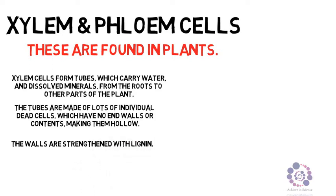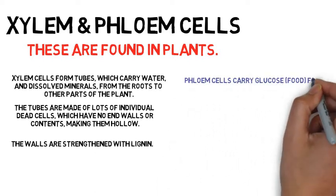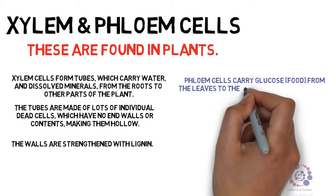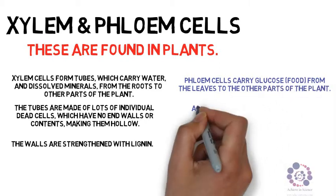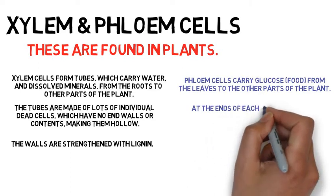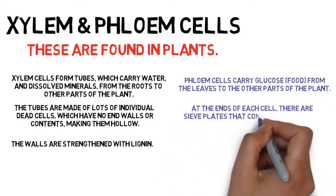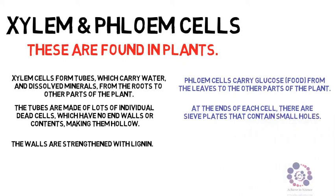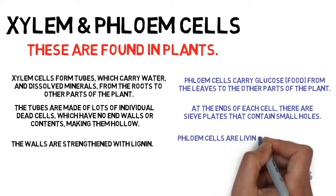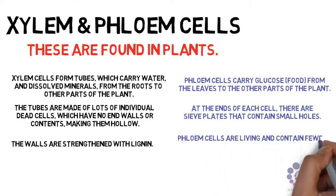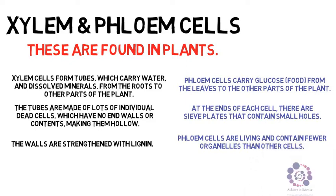On the other hand, the phloem is different. The phloem carries food, including glucose, where it's made in the leaves and needs to be transported to other parts of the plant. It's different to the xylem because the cells have ends with sieve plates, which allow small holes to let the glucose and food move through. The phloem cells are living, compared to xylem which is dead, and they contain fewer organelles.